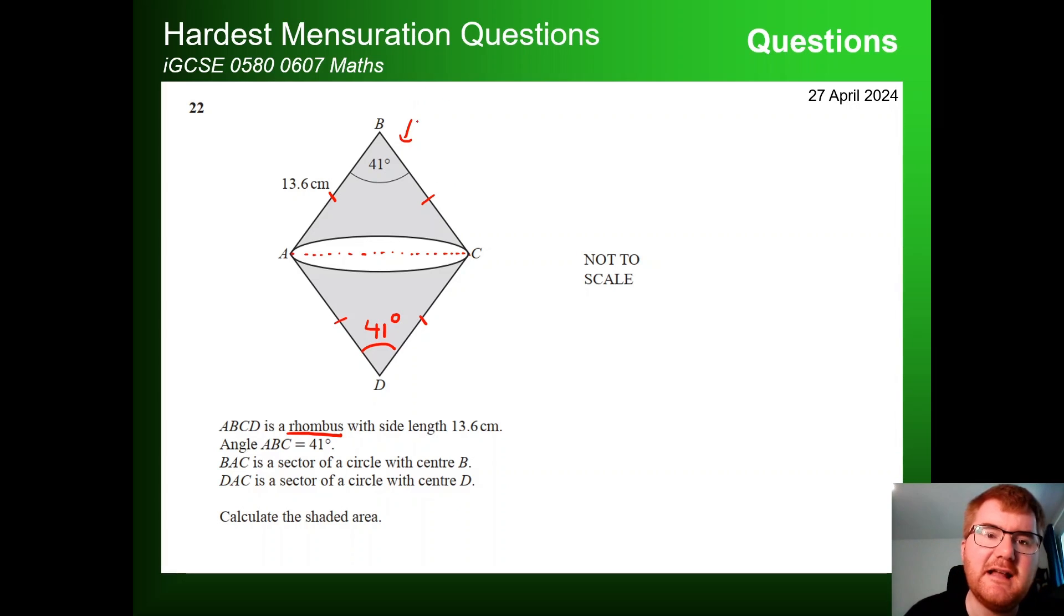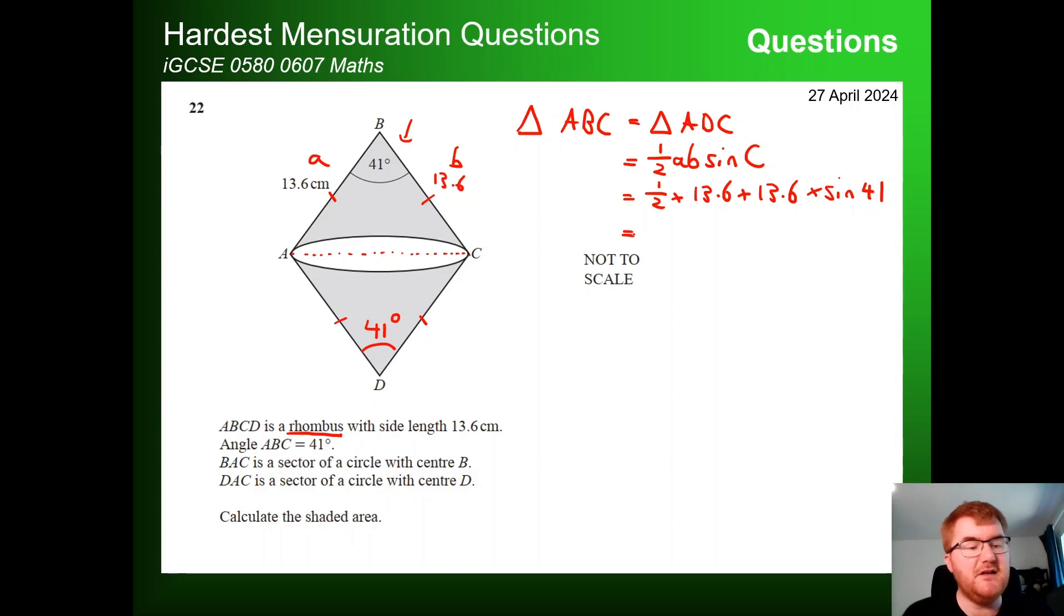So the first thing I'm going to do here is work out the area of the triangle. So this is really important about labelling here. So triangle ABC. Of course, this is going to be the same as triangle ADC at the bottom. And we're going to use the formula, the half AB sin C formula. Now if you're doing 0580, you don't have a formula sheet. 0607, you do. 2025, that's a bit different. So the way we work out the area of the triangle, we do a half times A and B. So these are these sides here. So both are going to be 13.6. And then we times by the sine of the angle in between, making sure your calculator is in degrees. That is very important. So if we pop that in, so I'm going to do 0.5 times 13.6 times 13.6 times the sine of the angle in between, that gives us 60.67. Notice I'm not rushing to simplify anything at this point, but I do have that worked out.